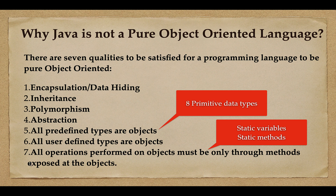The seventh quality states that all operations performed on objects must be only through methods exposed by the objects. In Java we typically create a class, define instance variables and methods, create an object, and call them using that object. However, in Java we also have static variables and static methods, and we can call those without using an object. That's the second reason why Java is not a pure object-oriented programming language.